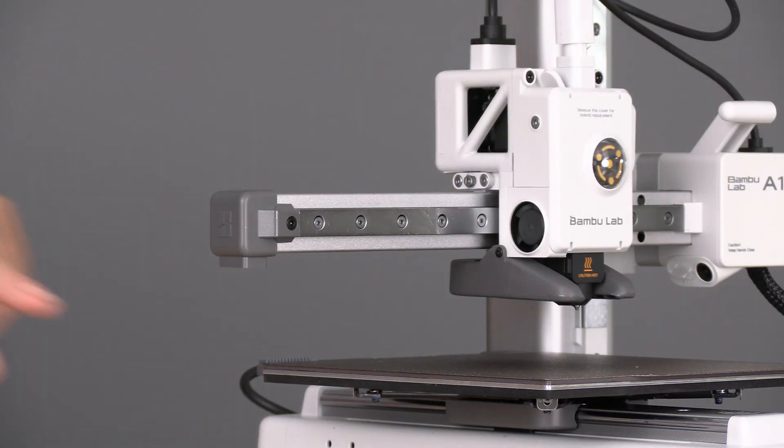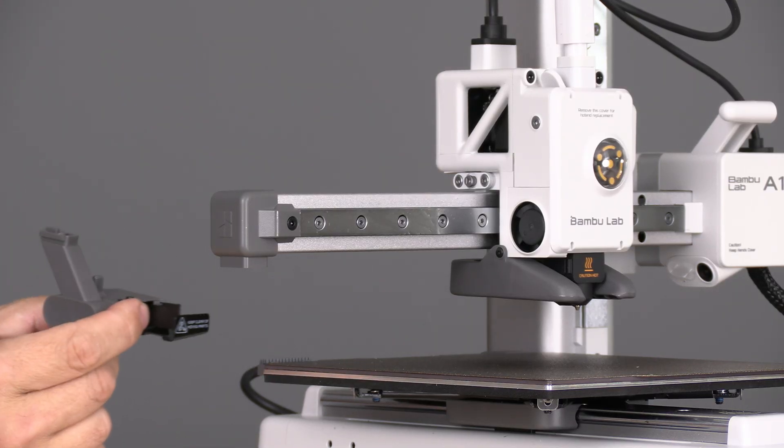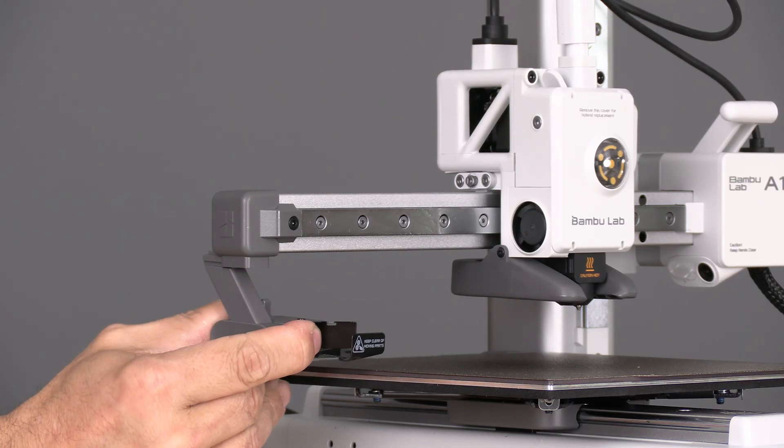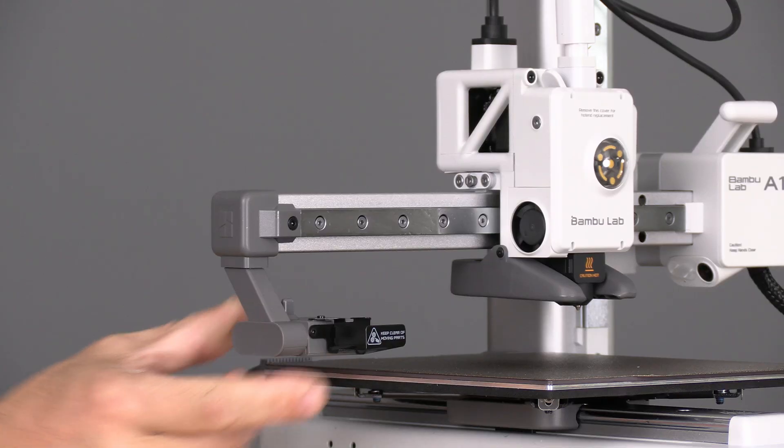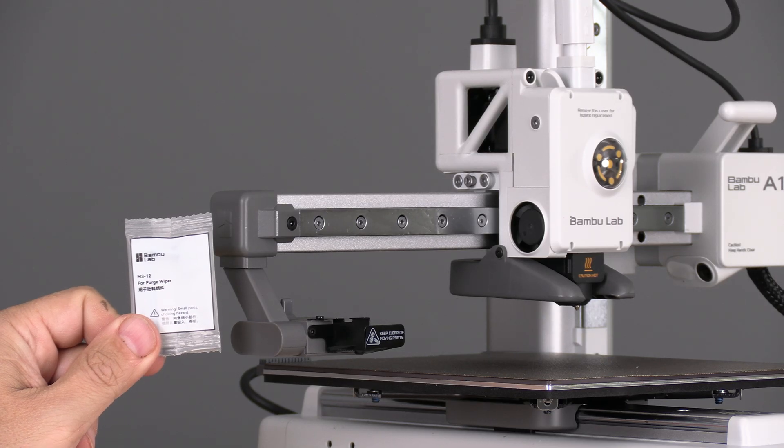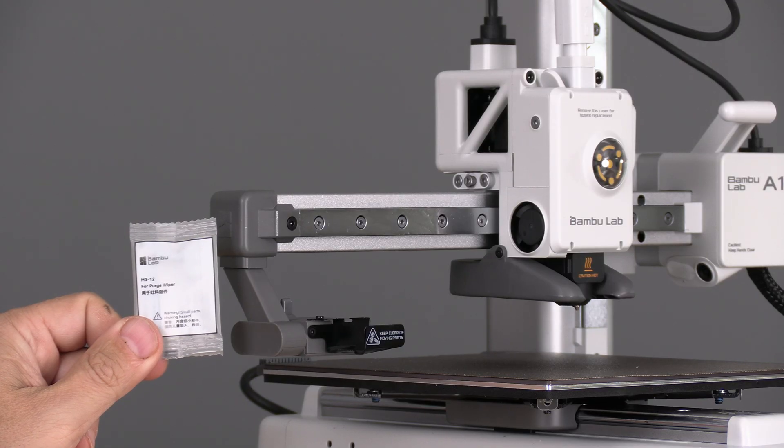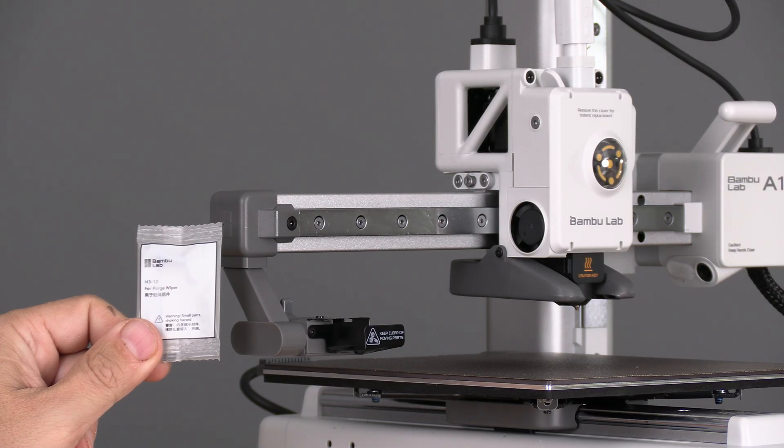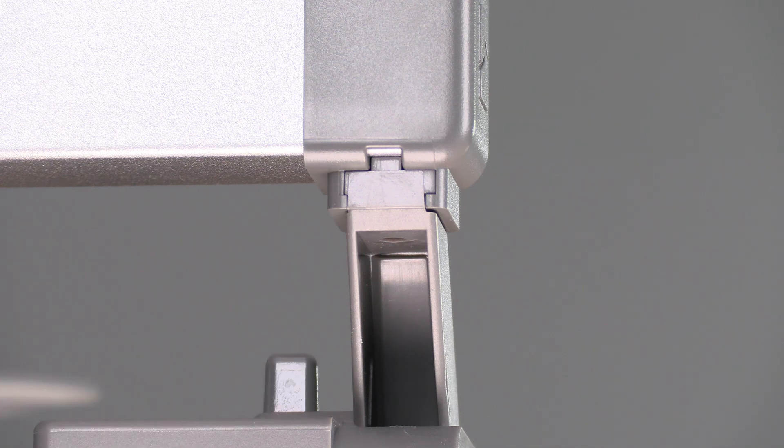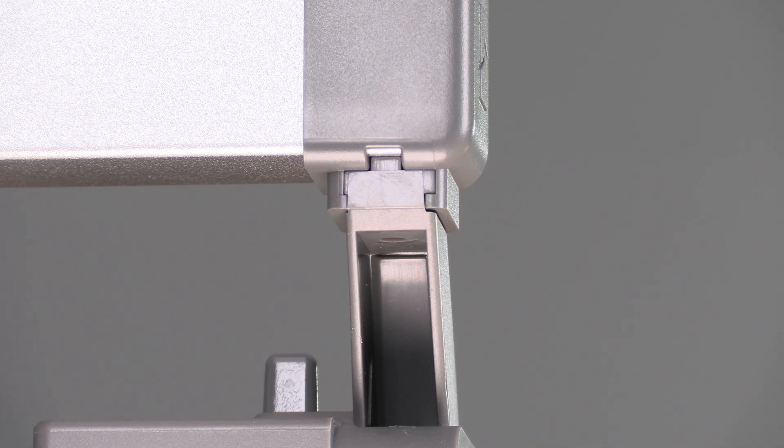Take note of this slot, right here. Take this part and slide it into that slot. Locate this bag. It says M3-12. Underneath that same spot, locate this hole and put that screw in the hole.